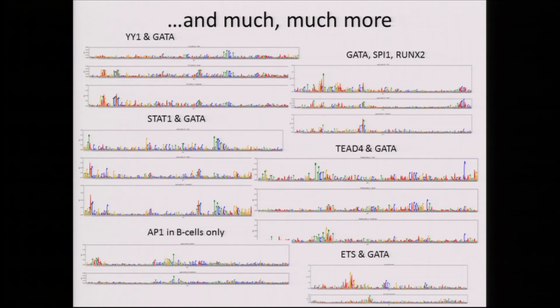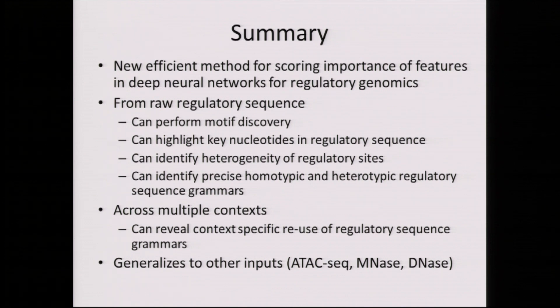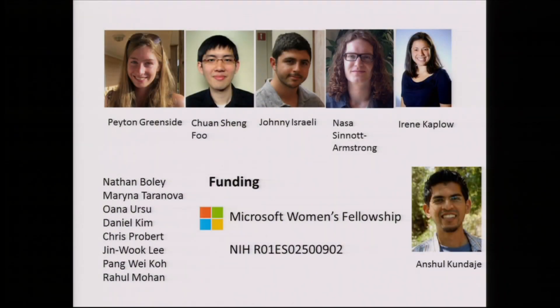You can do this for all cell types across multiple transcription factors — Peyton has been flooding us with images like this and we're very excited. To summarize: this is a new method for scoring the importance of features in deep neural networks. Starting from raw regulatory sequence, it can perform motif discovery, highlight key nucleotides, uncover heterogeneity, and find grammars. It also provides higher precision — ChIP-seq peaks are fairly broad, but DeepLift gives very precise scores at the important nucleotides. It provides context-specific scores so you can figure out which motifs are important for what, and it generalizes to other types of inputs — for example, finding RNA-binding protein motifs in the same way you'd conventionally find sequence motifs. I'd like to thank my lab mates, the wonderful alpha testers of DeepLift, and my advisor Anshul.